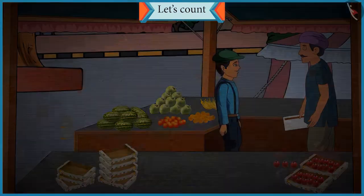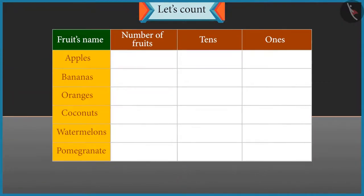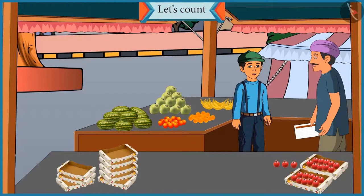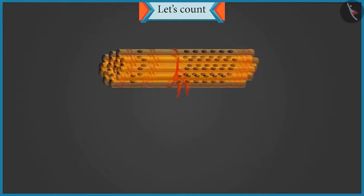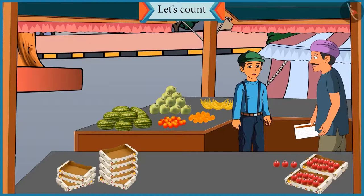Chotu, look. Different varieties of fruit are kept here. You have to count the fruits and tell their number. You also have to tell how many groups of ten are there in each, so that we can count them easily. Uncle, a group of ten means tens. In school our teacher taught us that a group of ten is called tens, and less than ten are called ones. So you count the fruits and tell me how we can show them in tens and ones.